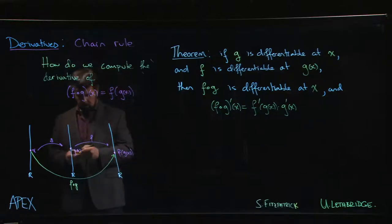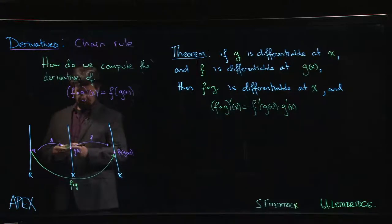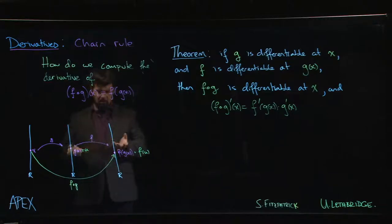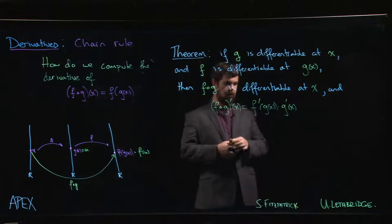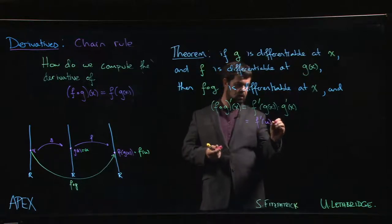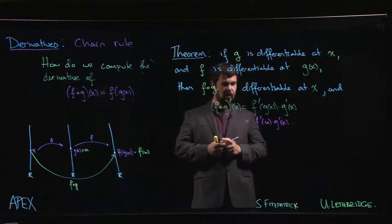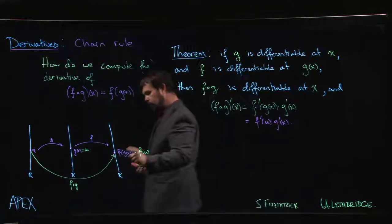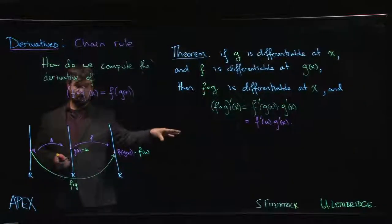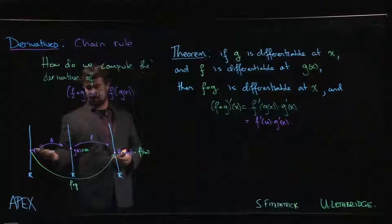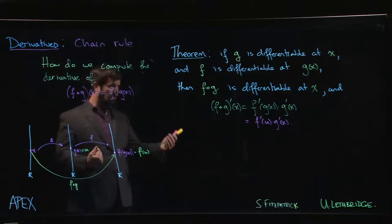One thing we might do is give g(x) a name — call it u. So this is like f(u). Then one way of thinking about what's going on is you've got f prime at u times g prime at x — it really is just the product of the two derivatives. F has to be evaluated at g(x), at u, because u is in the domain of f. We don't want f prime of x because x is not the input for f — u, which is g(x), is the input for f.